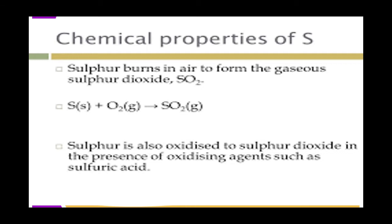Sulfur combines directly with some elements to form sulfides. When reacted with metals it forms a black solid. For example, if you take a mixture of sulfur and iron powder and heat it, it will form an exothermic reaction — a reaction whereby heat is evolved. Once the reaction is started, the whole mass of sulfur and iron will glow, because the reaction between sulfur and iron is exothermic.